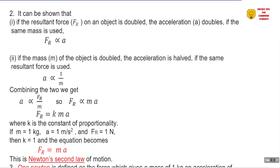Now combining the two, that's the first one and the second one, you end up with acceleration is proportional to resultant force over mass. And the constant of proportionality was found to be one, so which means resultant force will be equal to mass times acceleration.